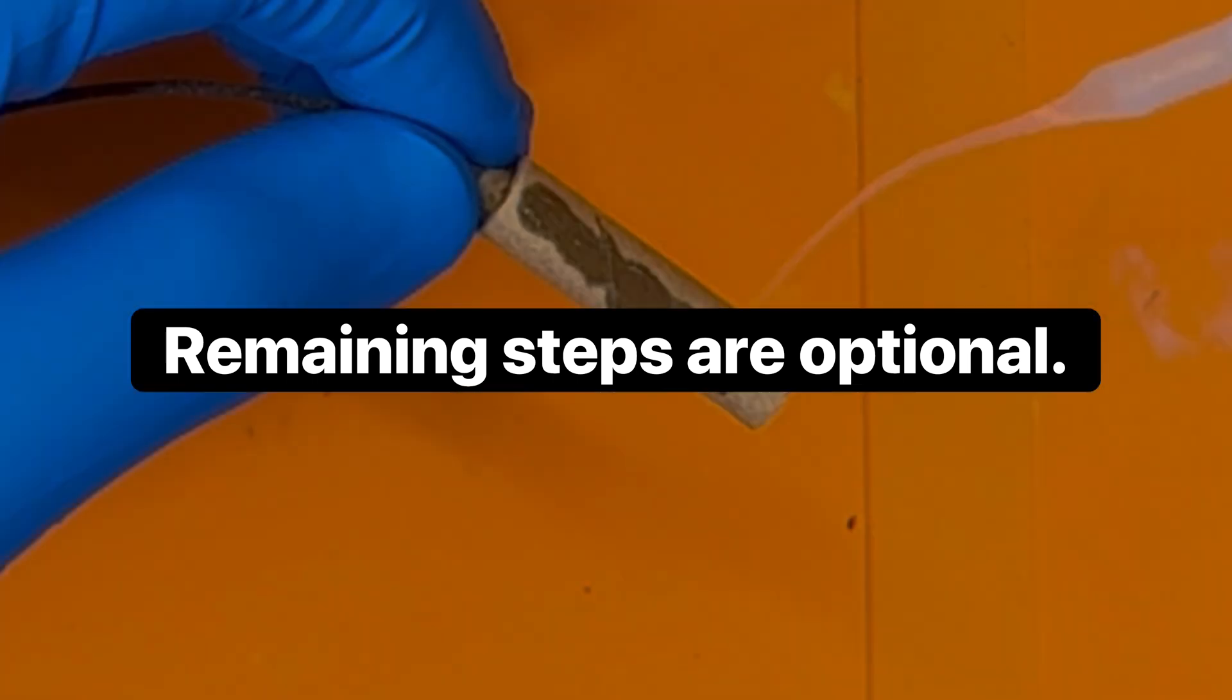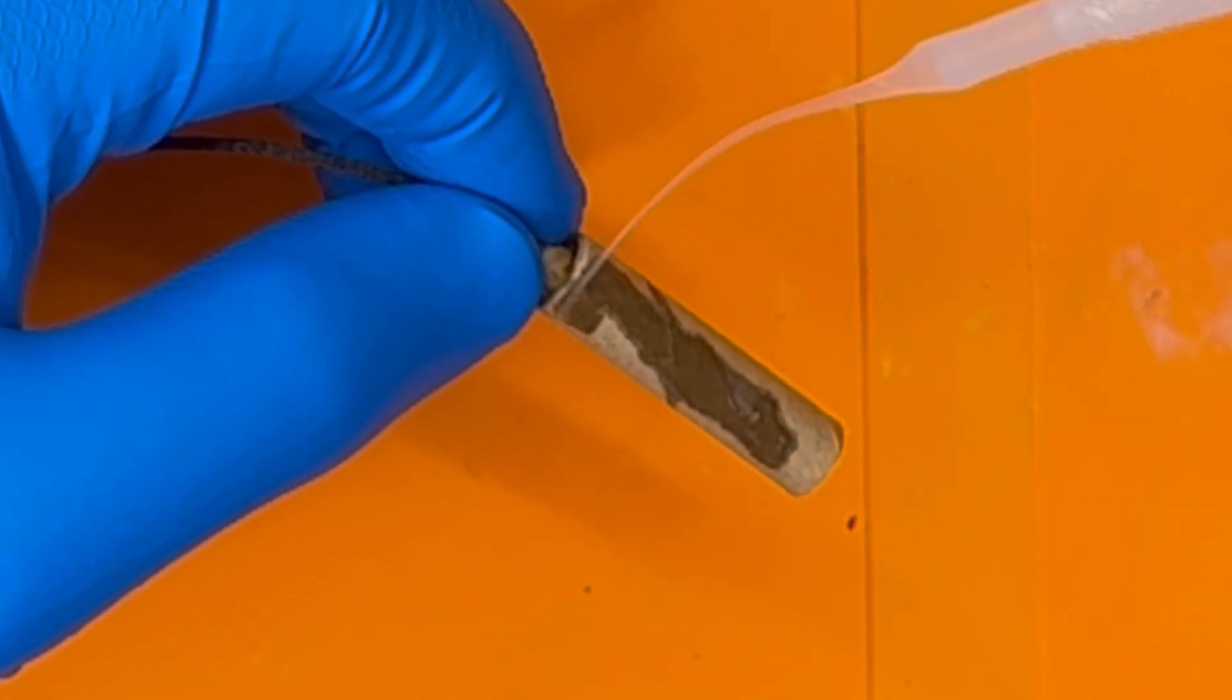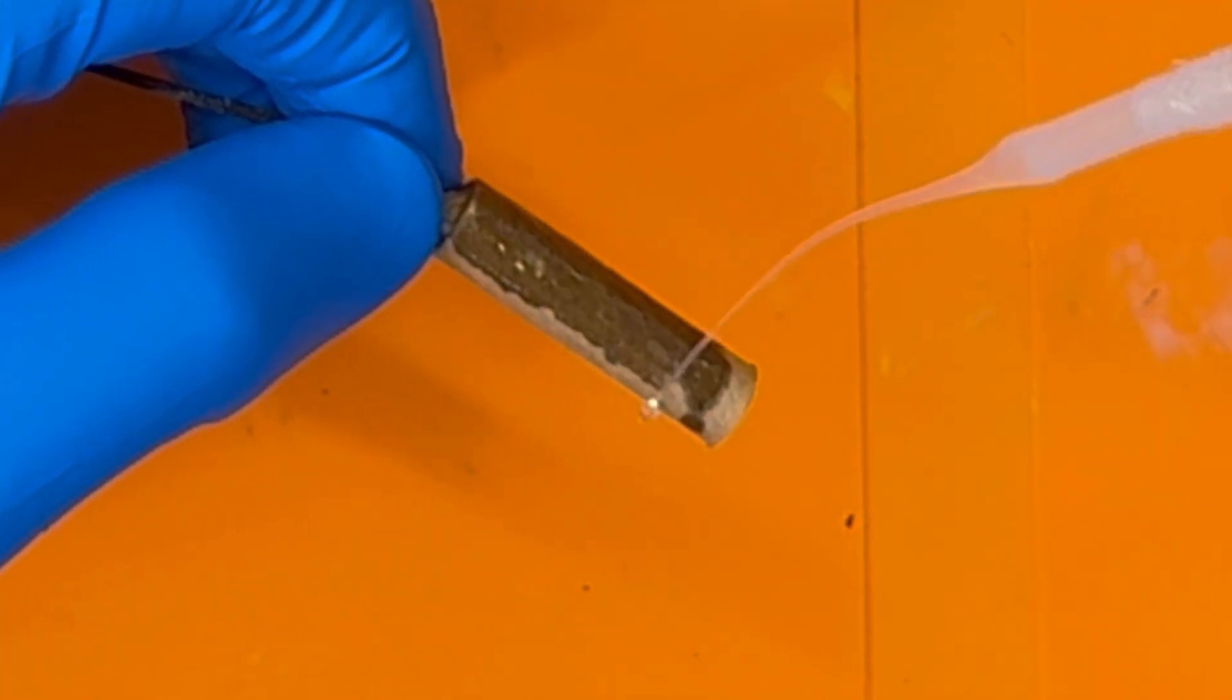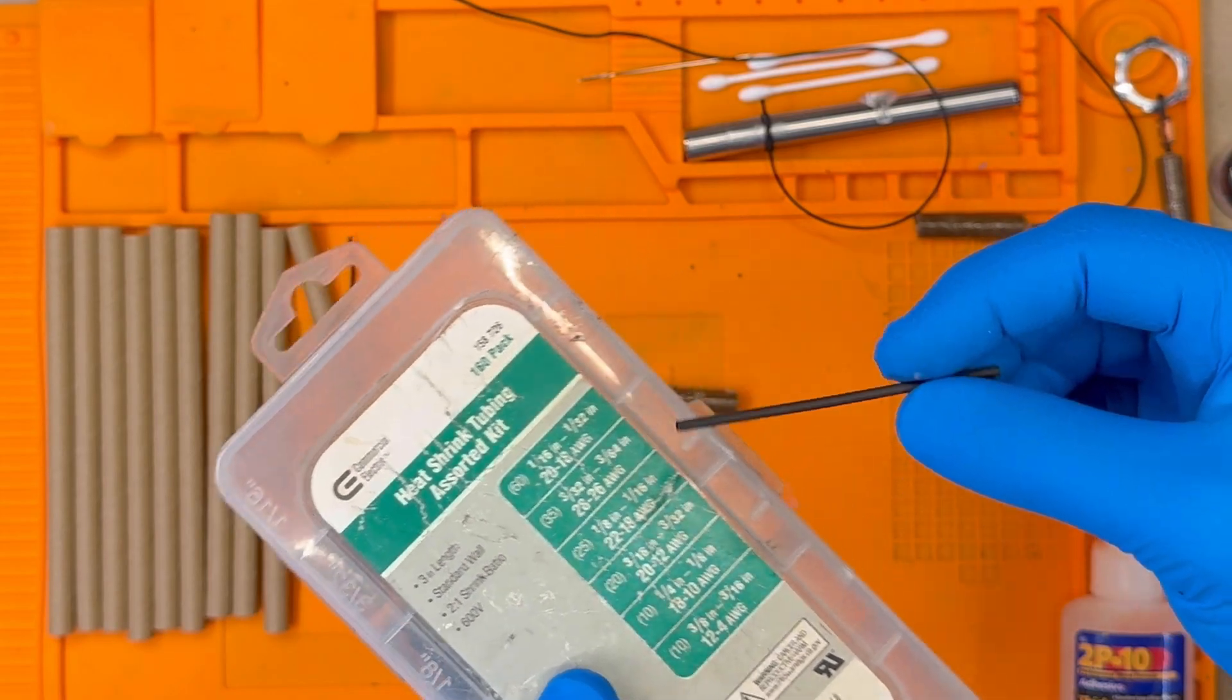The remaining steps are optional. I like to coat the igniter tubes with thin CA glue to improve durability. Capillary action does most of the work. Epoxy also works well.